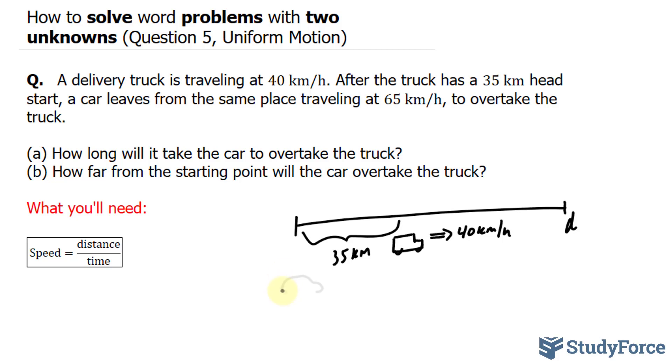But we know that it will be traveling at a constant pace of 65 kilometers an hour. So I'm going to draw the car right here, and it will be traveling at 65 kilometers an hour. Now if they're taking the same path, obviously at some point D in the future, this car will reach the truck.